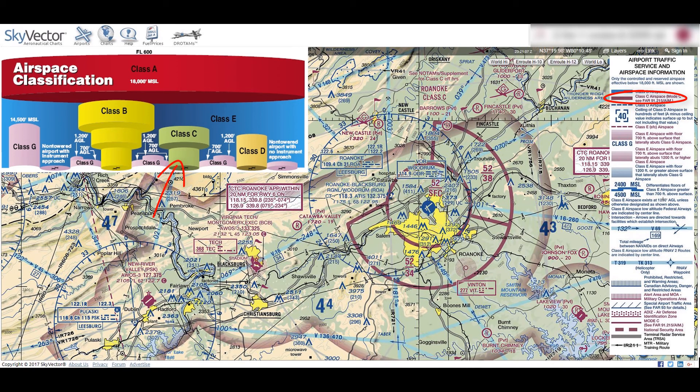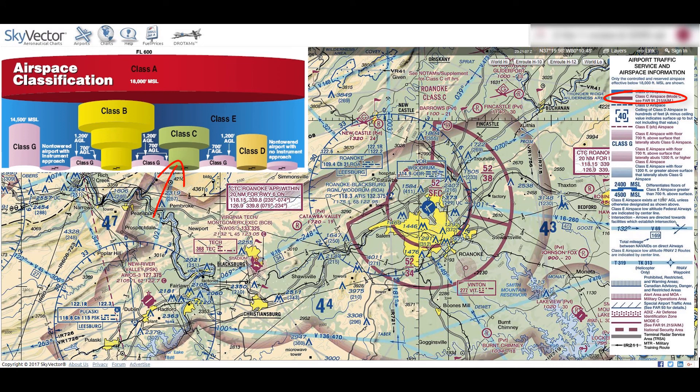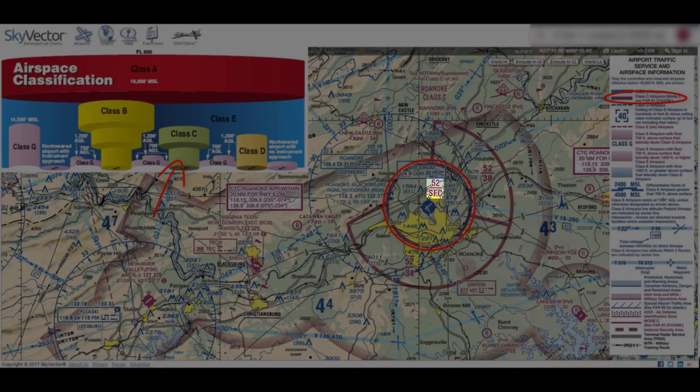Continuing on, we have class C airspace. Remember that C is for crowded. Class C airspace surrounds airports which have much more traffic than most but not enough to warrant a class B designation — this will include most regional airports like Roanoke Blacksburg Regional, Woodrum. The layout of class C is very much like class B, but the upside down wedding cake is much smaller and less complex. On the map, class C is marked by a solid magenta line. In this example, there is an inner circle from the surface to 5,200 feet MSL, a partial outer ring split into two sections, with the outer tier going from 3,400 to 5,200 feet and the second outer tier starting at 3,800 feet.